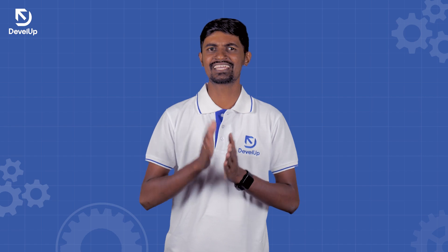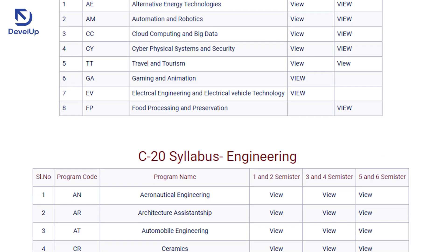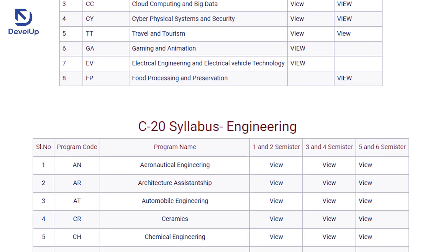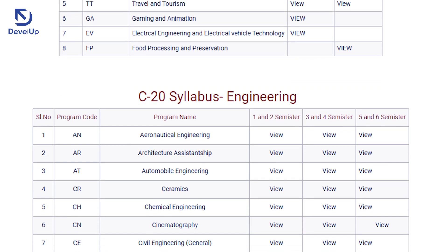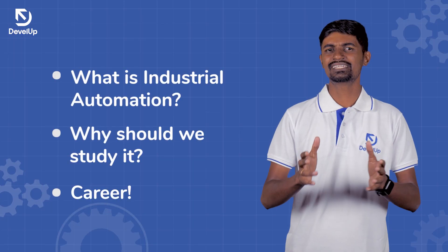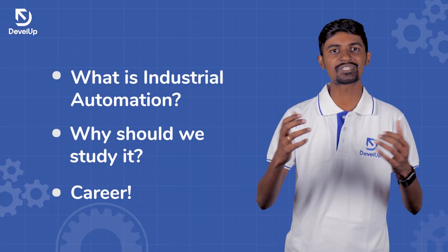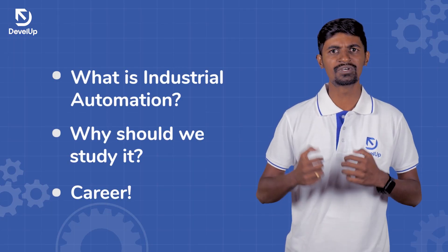Industrial Automation is a well-known term. You are a diploma student who knows this. When you are in C20, you have to add this subject. That's why I am studying Industrial Automation, and I am from DevelUp.